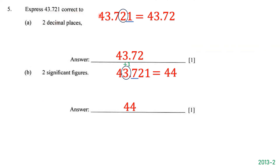The next question says: express 43.721 correct to two decimal places. The first decimal digit is 7 and the second is 2, so we circle 2 and underline 1 to its right. Since 1 is less than 5, we do not round up — we keep 2 the same and drop the 1. The answer is 43.72.